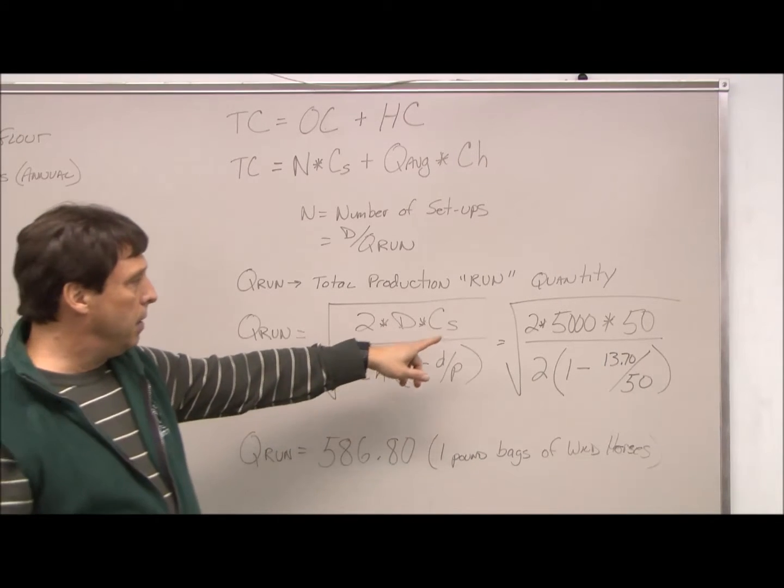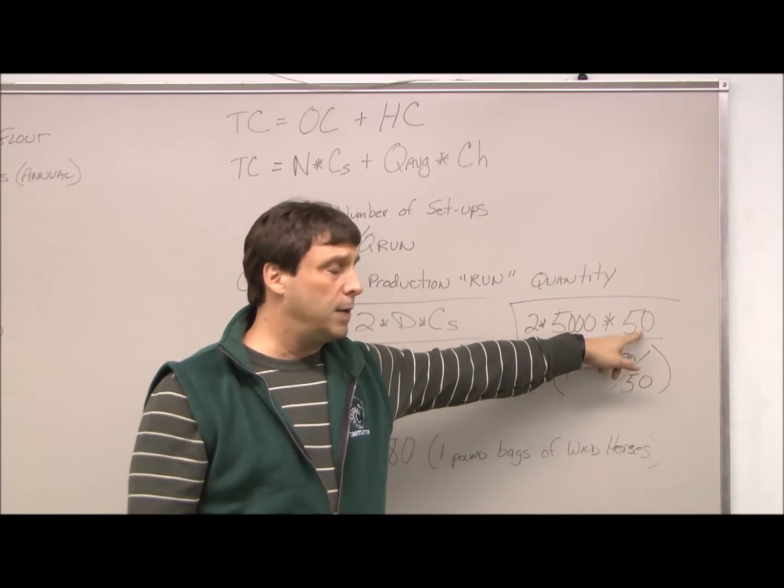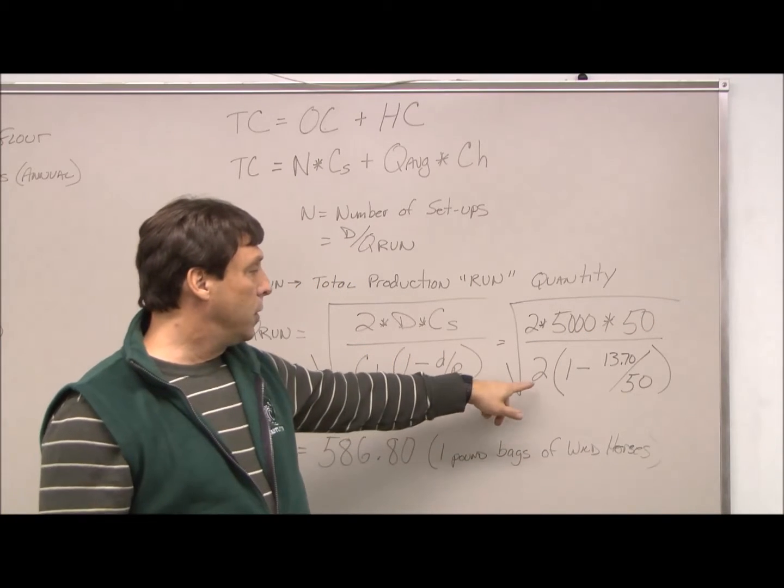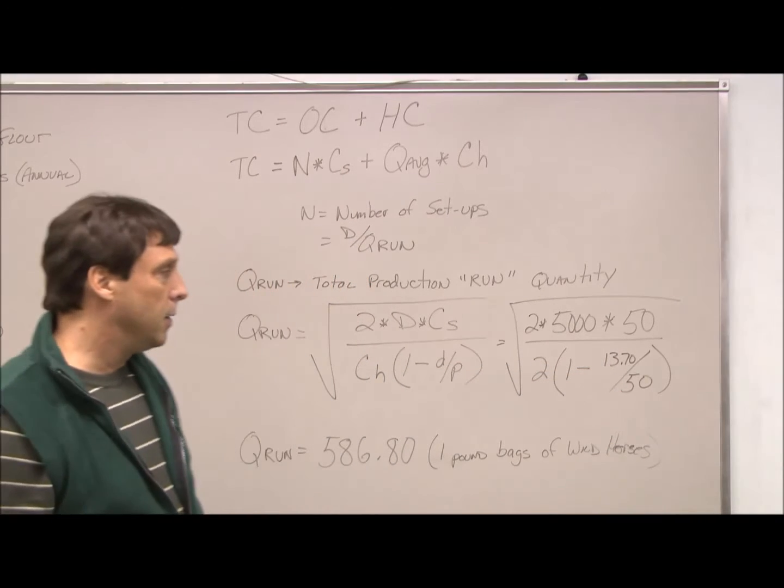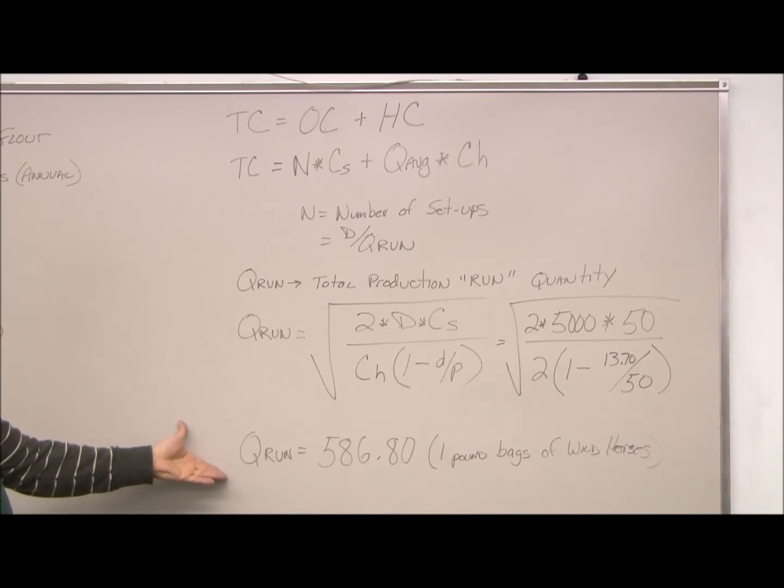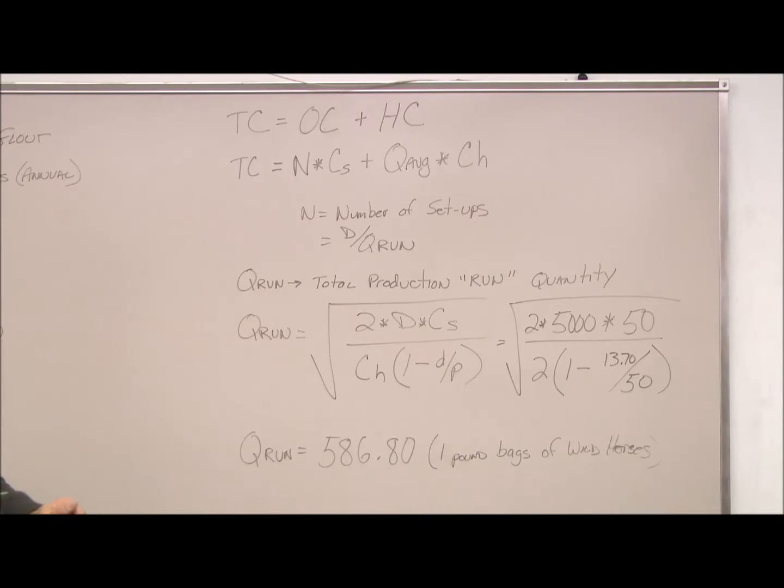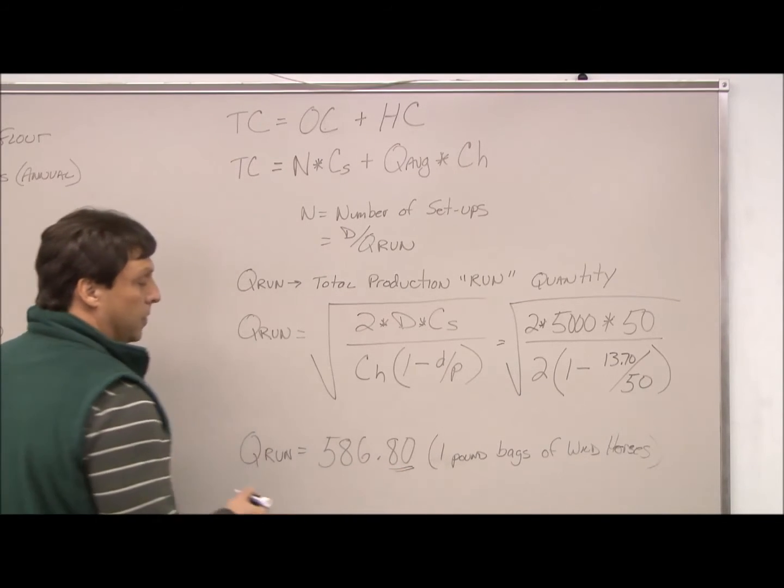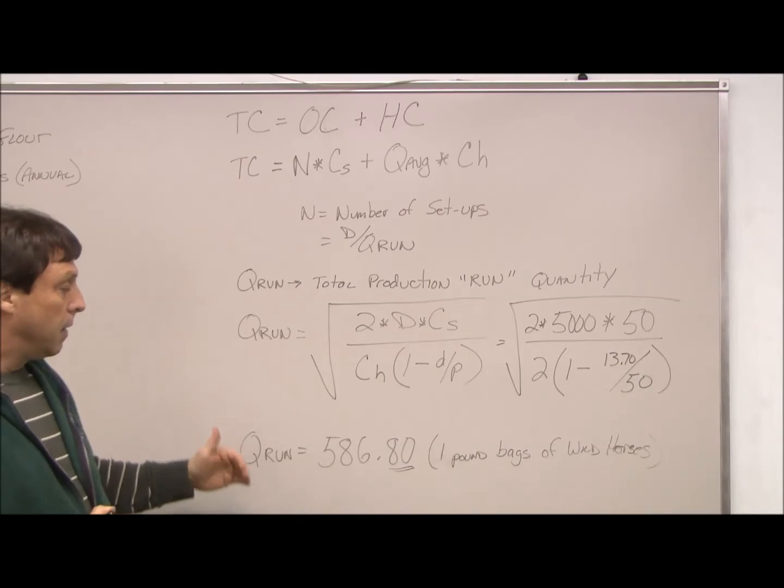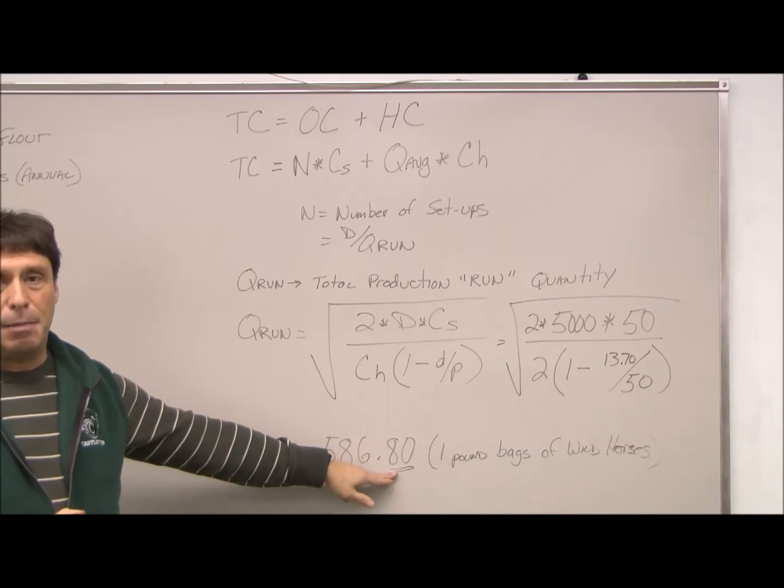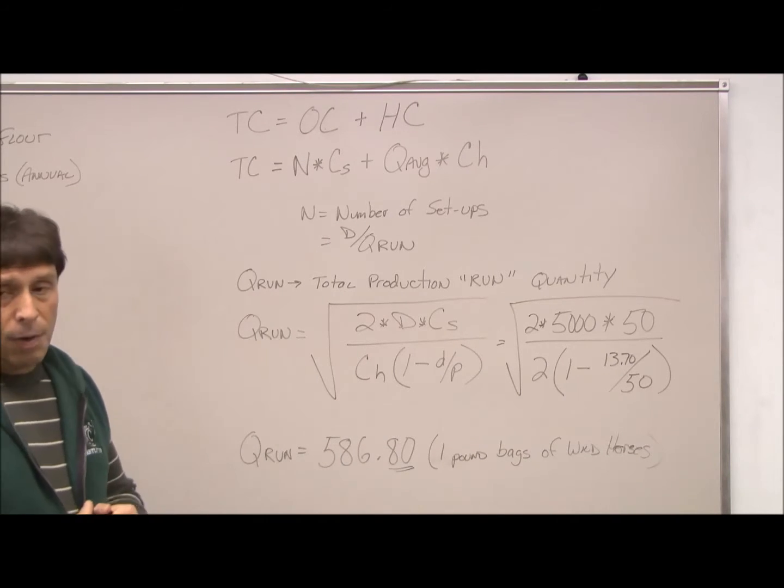So we just plug the numbers in. We have our annual demand is 5,000, our setup charge is $50 per unit, our holding cost is $2, D we just calculated at 13.7, and our production rate is 50 given. What we solve for that is 586. One convention we will be using in this class is we're going to round off to two decimal places, so I just pointed at 0.80. In real life, you would have some type of convention with your company because it doesn't make sense making 0.8 of a unit, so you'd probably round up to 587 units.